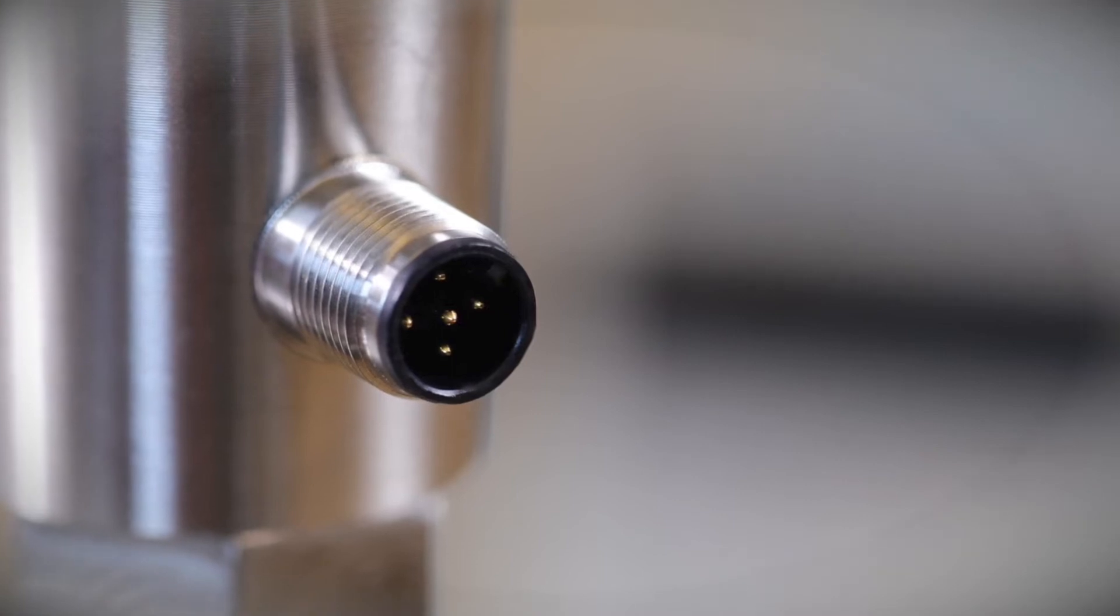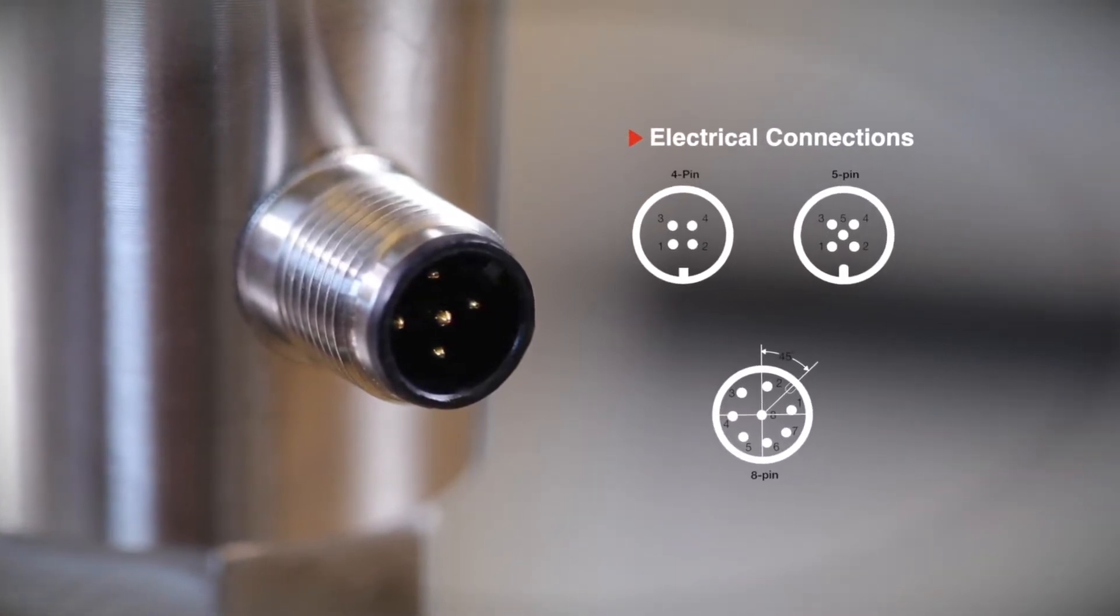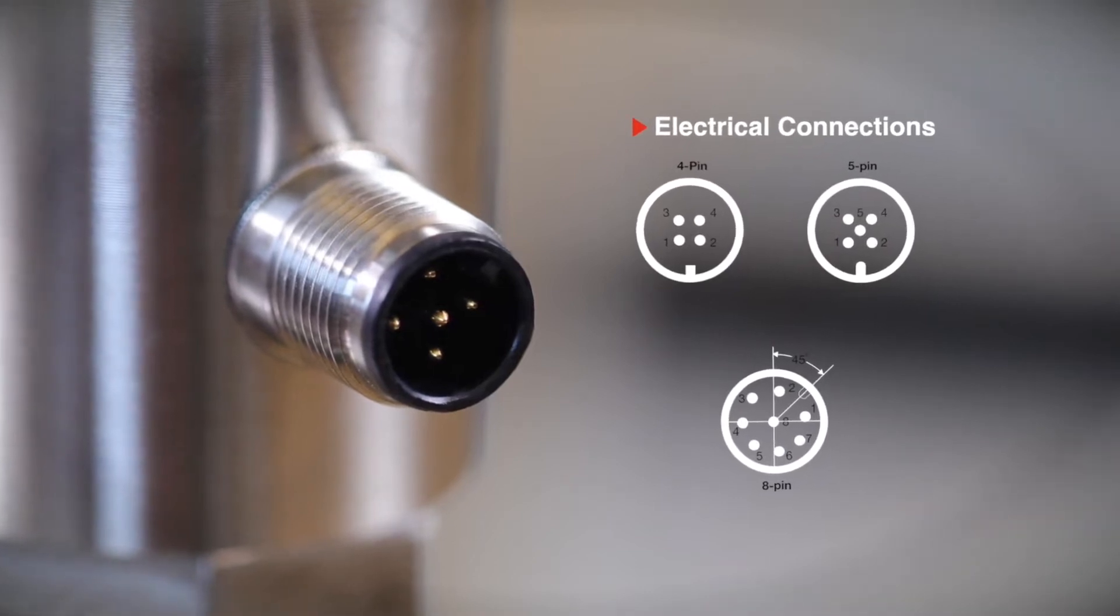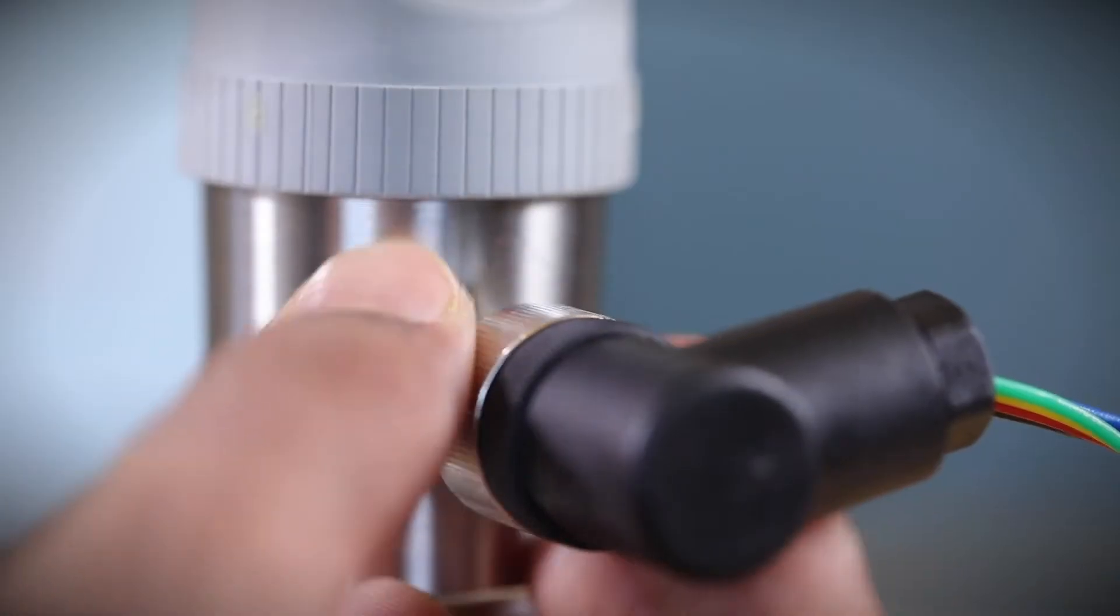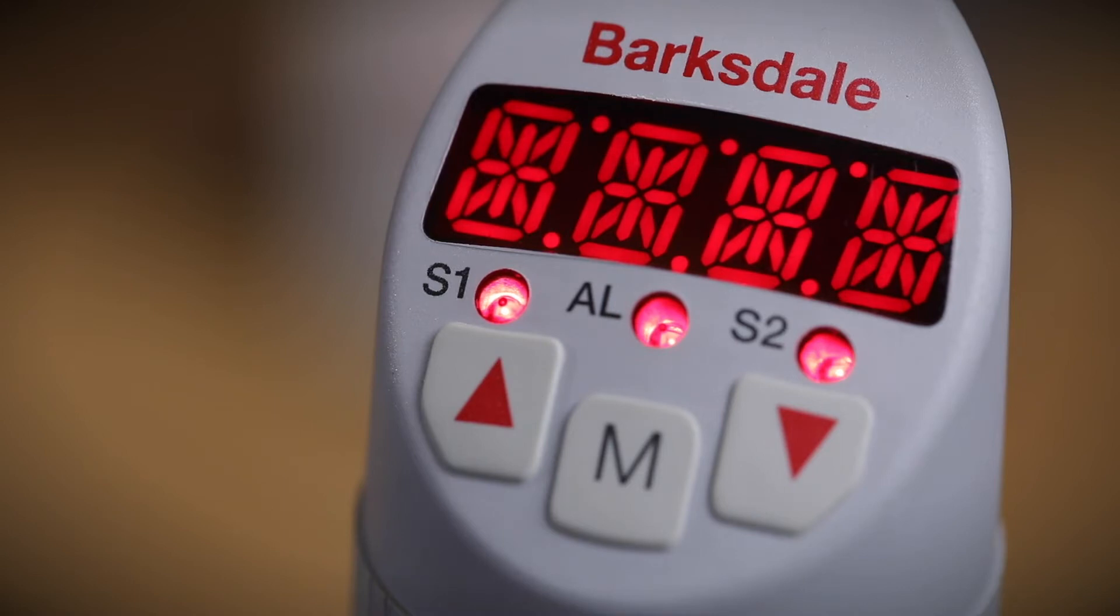Even when mounting upside down, the indication can be viewed correctly as the software allows inversion of the display. The BPS 3000 has four and five pin standard M12 electrical connection along with eight pin connection for relay output version.